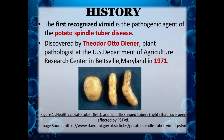The first recognized viroid is the pathogenic agent of the potato spindle tuber disease. It was discovered by Theodore Otto Diener, a plant pathologist at the US Department of Agriculture Research Center in Beltsville, Maryland in 1971. On the left is shown a healthy potato tuber, and towards the right we have the spindle-shaped tuber which is affected by the potato spindle tuber viroid disease.